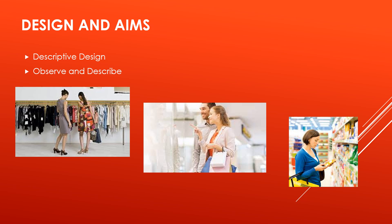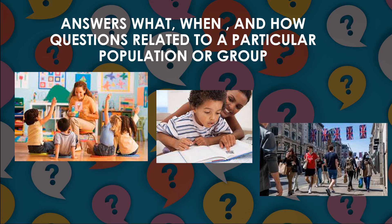This kind of research is also used in places where you want to describe behavior. For example, Monash University carried out a survey of 1,000 Australian shoppers just to find out if, post-COVID, the popularity of online shopping has increased or decreased with respect to brick and mortar or physical stores. Descriptive research collects data used to answer a wide range of what, when, and how questions pertaining to a particular population or group.